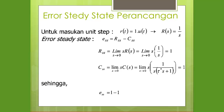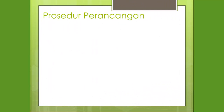Nilai error steady-state dari perancangan: misalkan diberikan sinyal unit step r(t) = 1·μ(t), maka R(s) = 1/s. Dengan mengoperasikan limit pada fungsi input dan output, diperoleh error steady-state bernilai 0 (1 dikurangi 1 = 0).